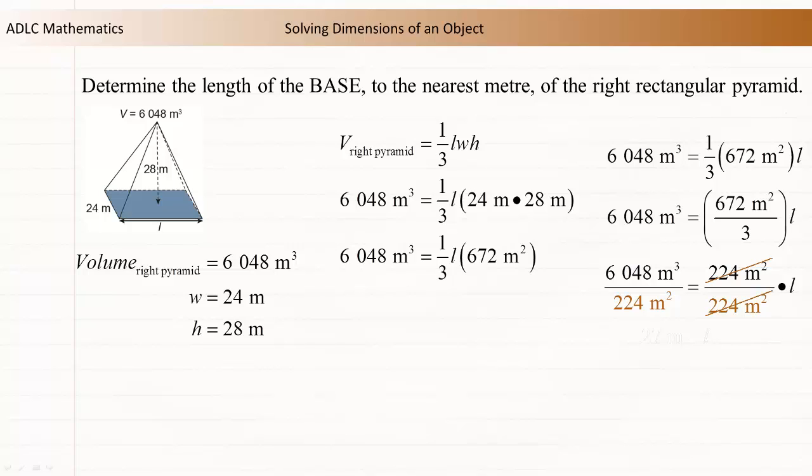To undo the multiplication operation, divide both sides of the equation by 224 meters squared. 6048 meters cubed divided by 224 meters squared is 27 meters.